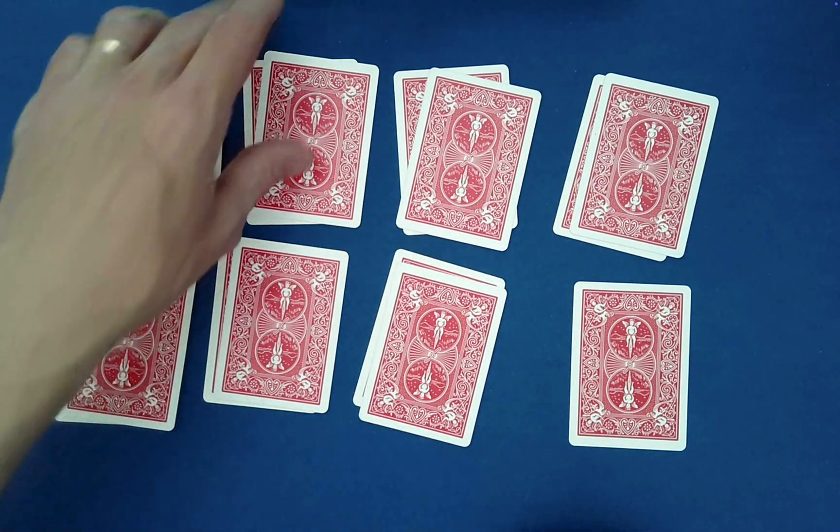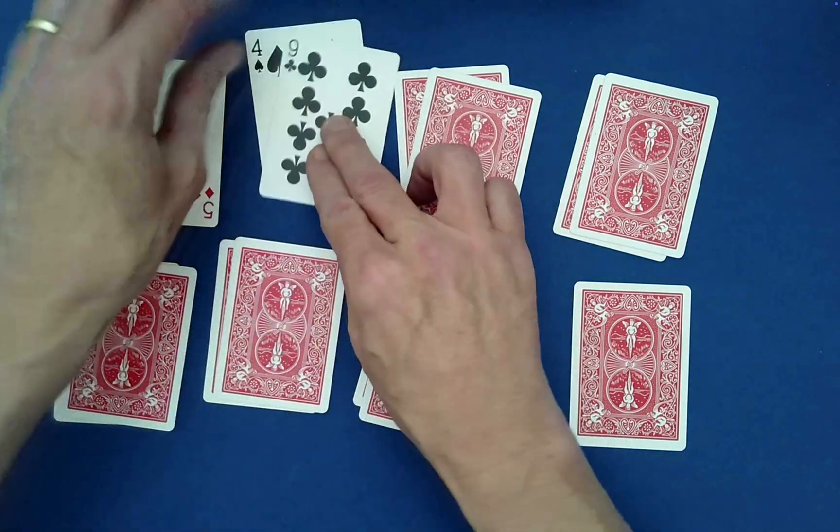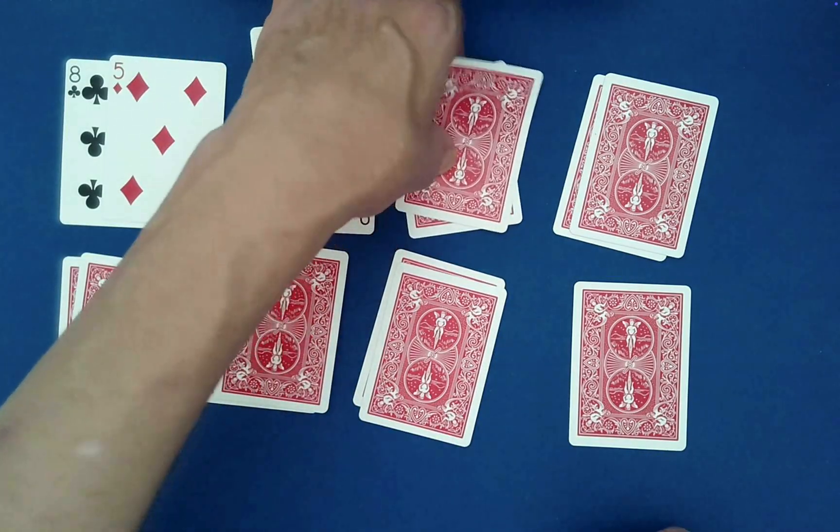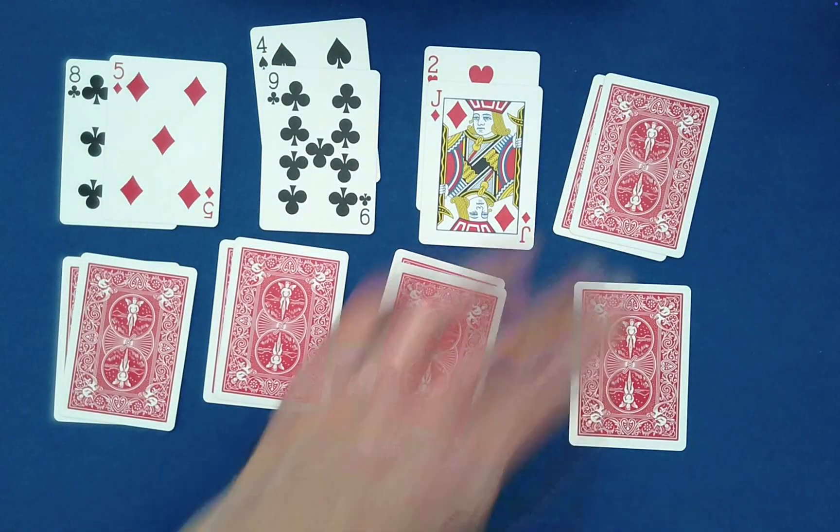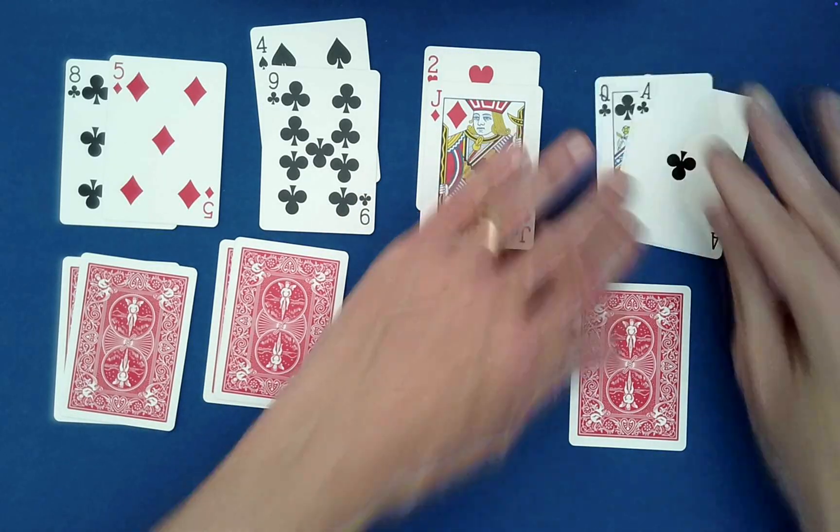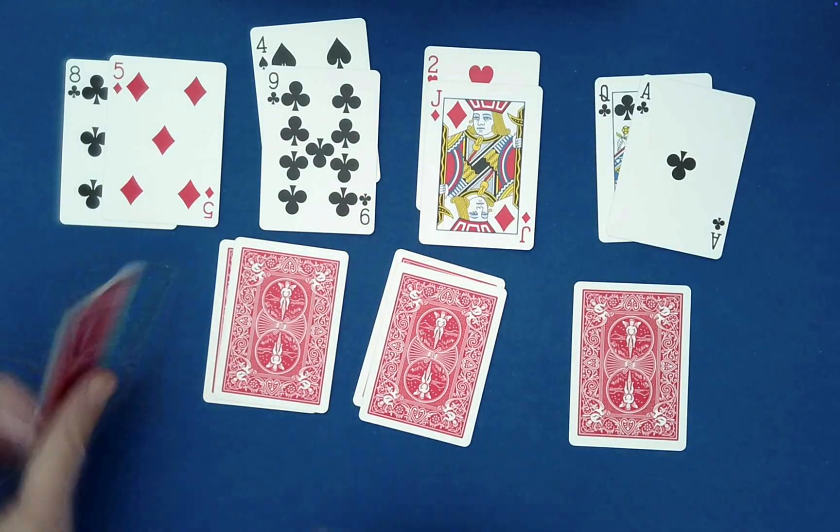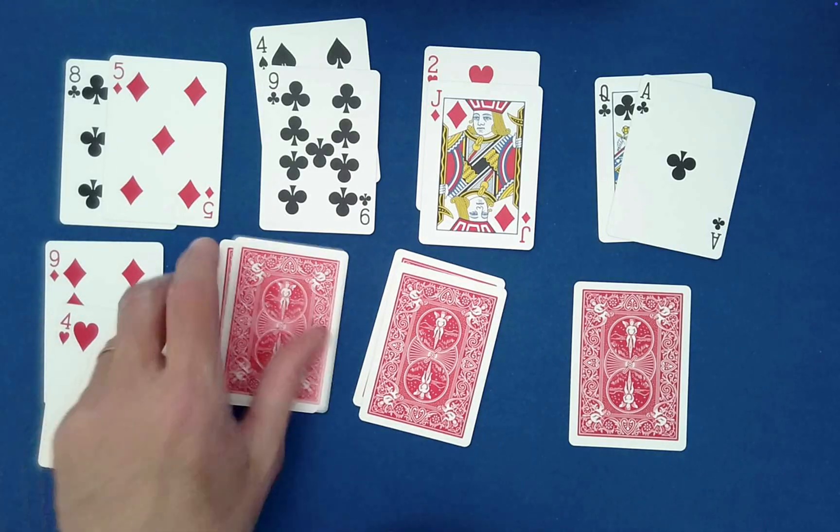Eight and five, that's 13. Four and nine, 13. Very good. Jack is 11 plus two is 13. Queen's 12 plus one is 13. Nine and four, of course, 13.